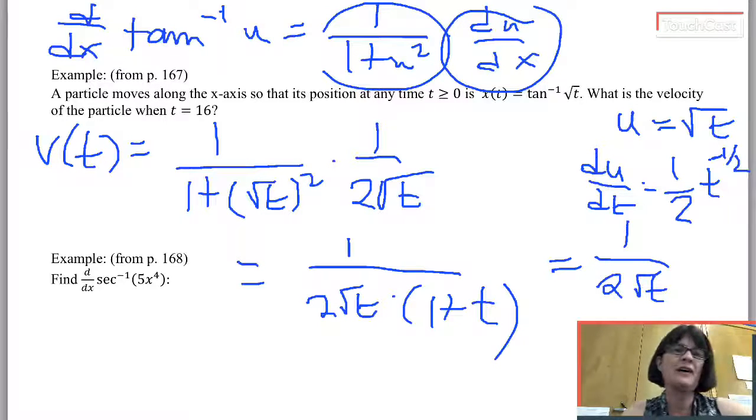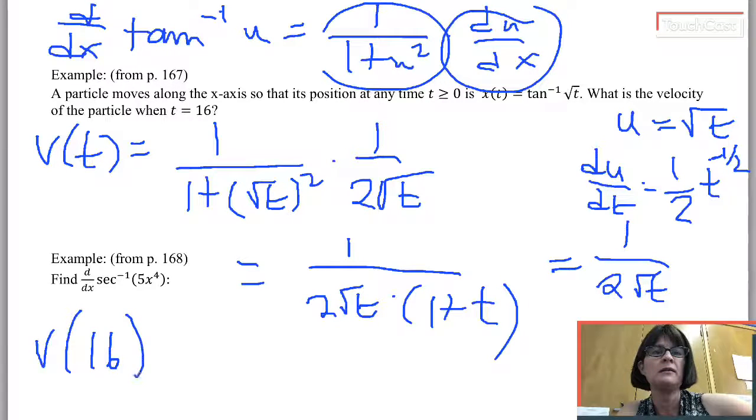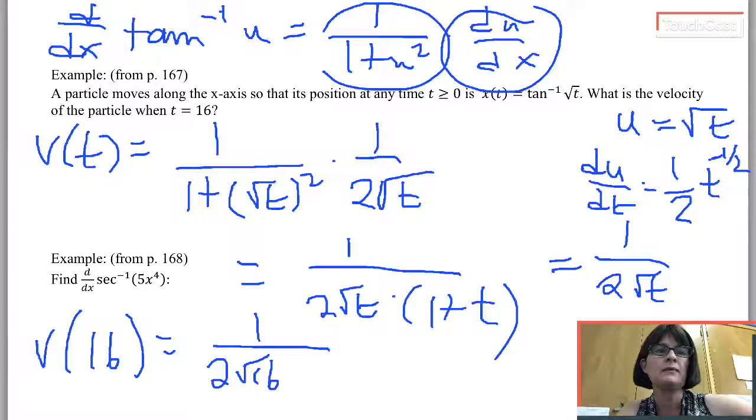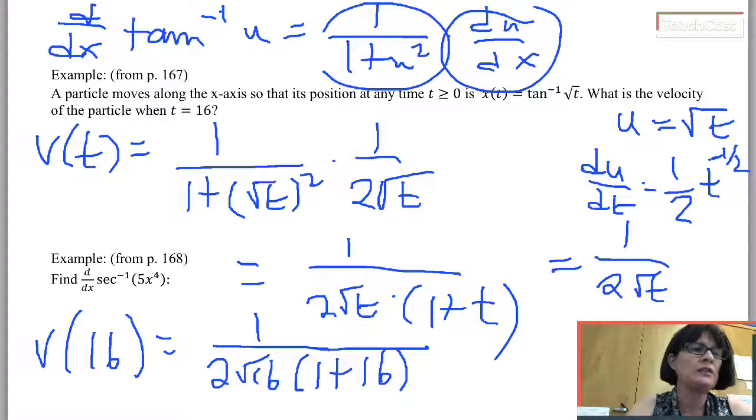Now I've been asked to find v of 16. v of 16 is going to be 1 over 2 times the square root of 16 times 1 plus 16. Which you could simplify. That's square root of 16 is 4, so 1 over 2 times 4, 1 over 8. So still in the denominator, 1 over 8 times 17.